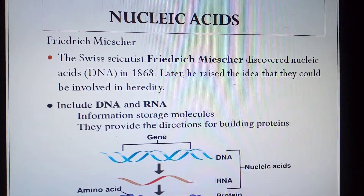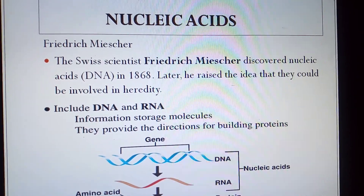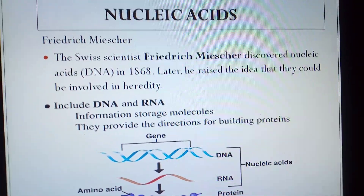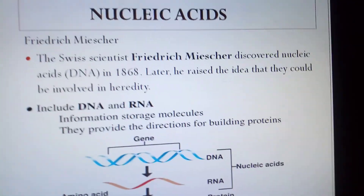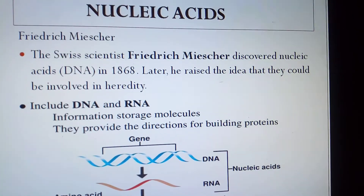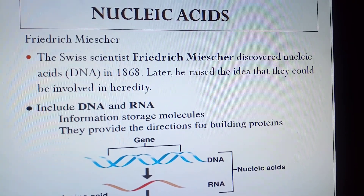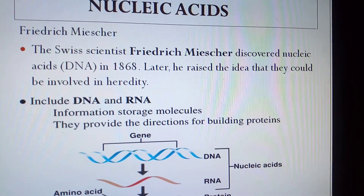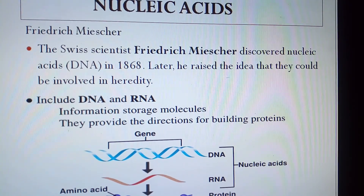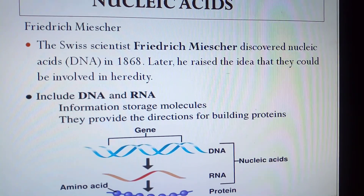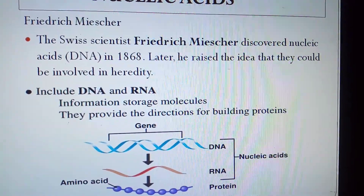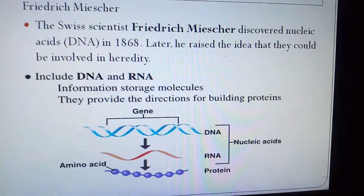Today's first topic is Nucleic Acid. Nucleic Acid was discovered by Frederick Miescher. The Swiss scientist Frederick Miescher discovered nucleic acid DNA in 1868. Later he raised the idea that they could be involved in heredity. Nucleic acids include DNA and RNA — they are information storage molecules and provide the direction for building proteins.